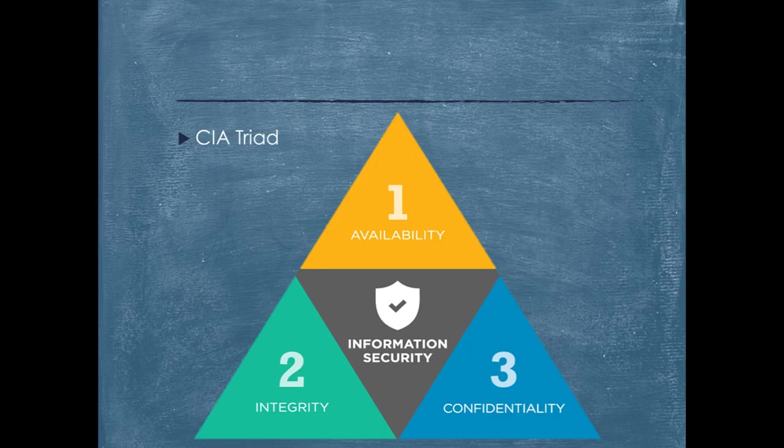Safeguarding data includes protecting against unpredictable events such as natural disasters and fire. To prevent data loss from such occurrences, you will have a backup copy stored in a geographically isolated location, perhaps in a fireproof or water-safe environment. Extra equipment or software such as firewalls and proxy servers can guard against downtime and unreachable data due to malicious attacks such as DOS — denial of service — attacks and network intrusions.